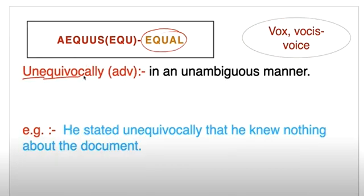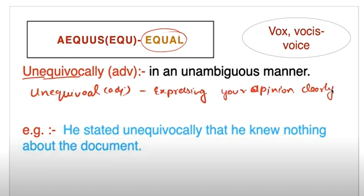Aequus means equal, vox means voice. Unequivocally means in an unambiguous manner. Example: He stated unequivocally that he knew nothing about the document. So unequivocally means expressing your opinion clearly.